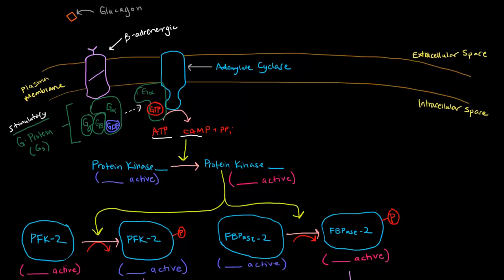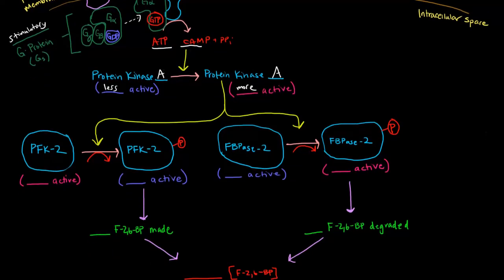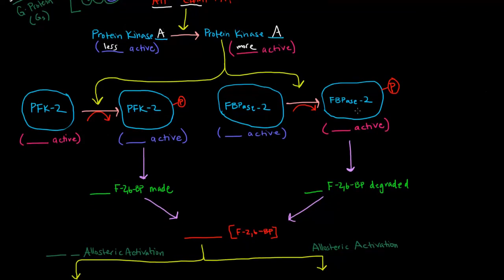So glucagon via a G-protein coupled receptor - glucagon will come in and it will bind its G-protein coupled receptor. And the G-protein of course is a stimulatory G-protein, initially inactive with its GDP. It gets replaced with a GTP and therefore is active, heads over to adenylate cyclase. Adenylate cyclase makes a bunch of cyclic AMPs from ATP. Now it will activate protein kinase A, so it takes it from a less active state to a more active state.